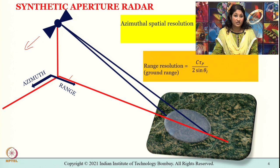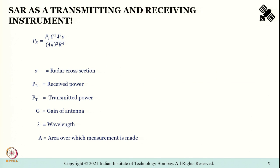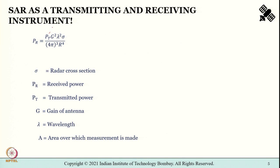Shown here are the relationships for azimuth spatial resolution, which is the length of antenna divided by 2. The ground range resolution is given as c tau_p divided by 2 times sin(theta_i), where theta_i is the incidence angle. The radar equation gives the fundamental relationship: P_R equals P_T times G squared times lambda squared times sigma divided by (4 pi cubed times r to the 4).